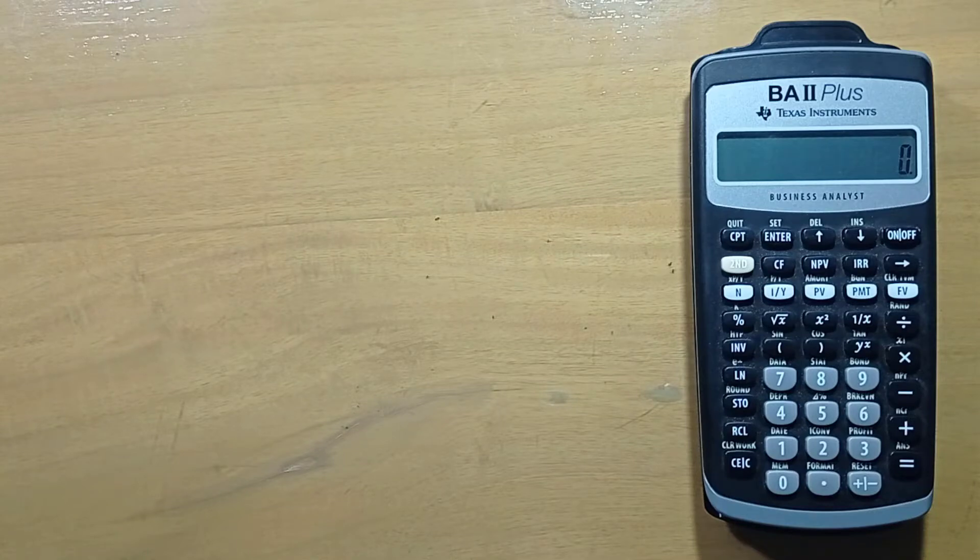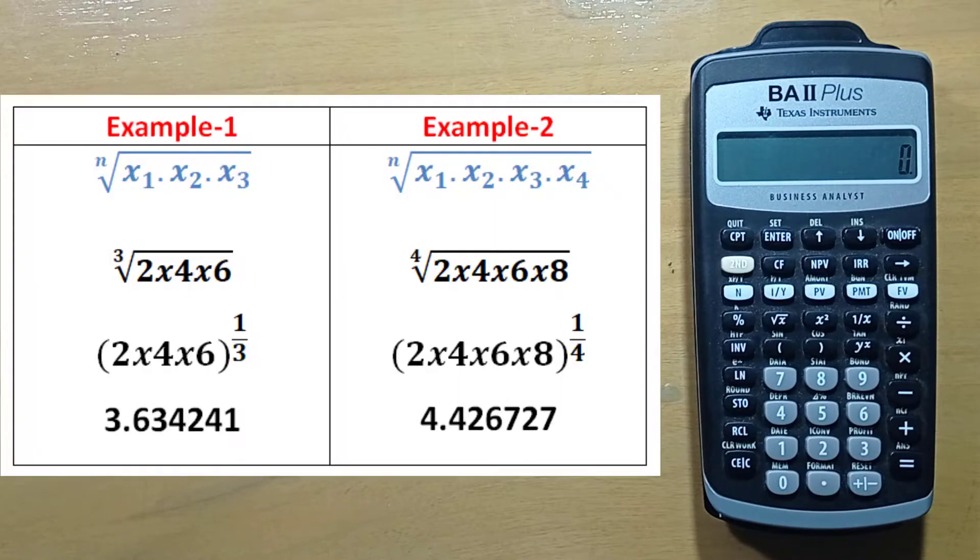The geometric mean can be found by multiplying all the numbers in a given data set and taking the nth root of the obtained result. The formula will make it easy to understand. You can see the formula. Here n is the number of variables.